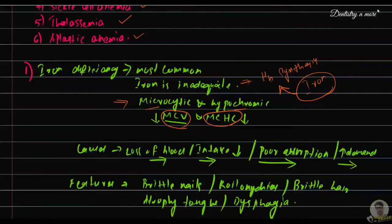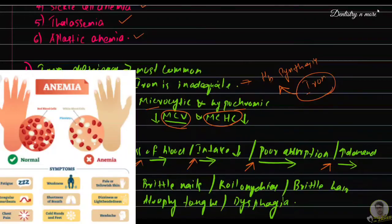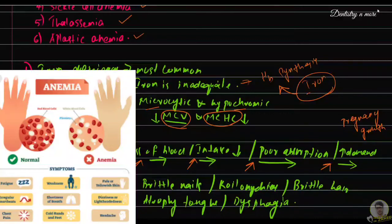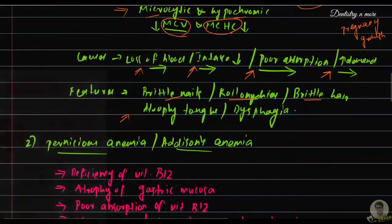The causes of iron deficiency anemia include loss of blood, decreased intake of iron, poor absorption of iron, or over-requirement of iron — for example in pregnancy and growth phases where the body needs more iron. Features of iron deficiency anemia include brittle nails and brittle hair, spoon-shaped nails known as koilonychia, atrophy of papillae on the tongue, and dysphagia (difficulty in swallowing).